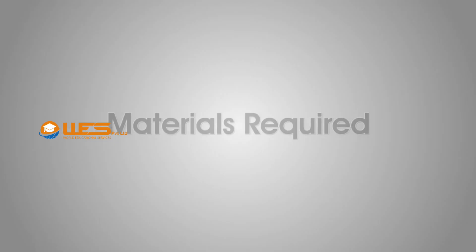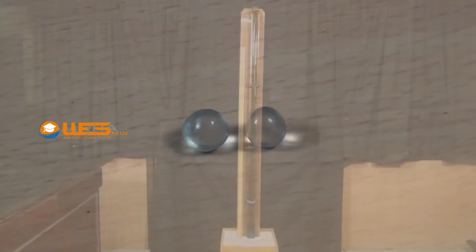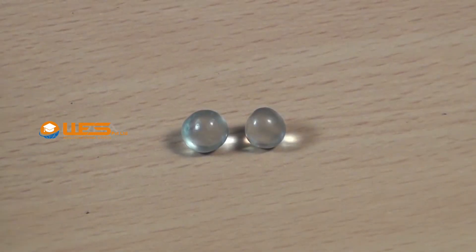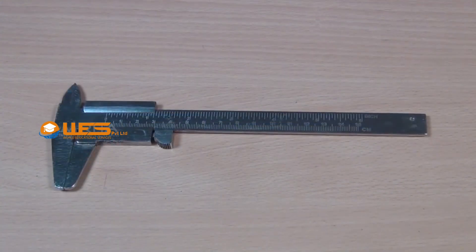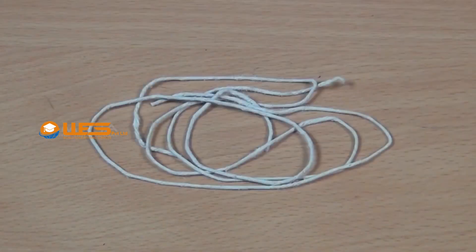Materials Required: Falling ball viscometer, 2 spherical balls of same size, screw gauge, vernier calipers, stop clock, thread.